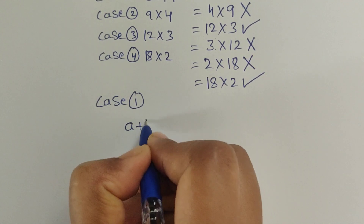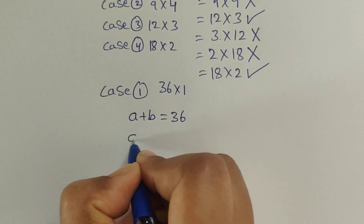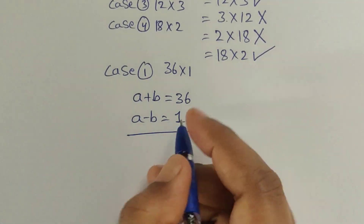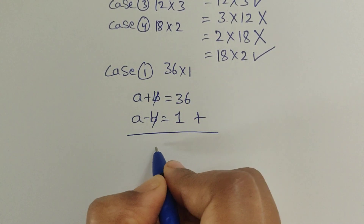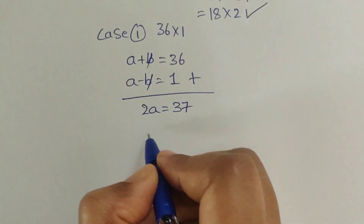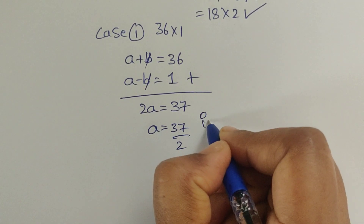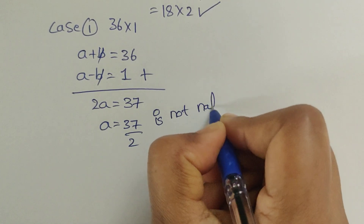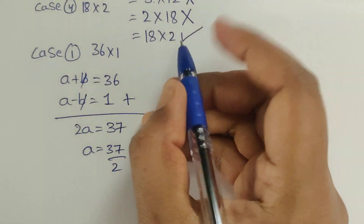Case 1: a plus b equals 36 and a minus b equals 1. Adding these two equations, the b terms cancel, giving 2a equals 37, so a equals 37 divided by 2. This is not a natural number, so Case 1 is rejected.